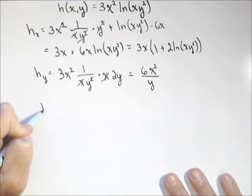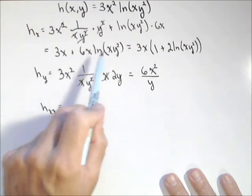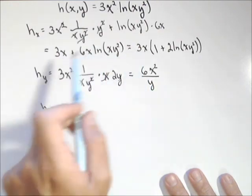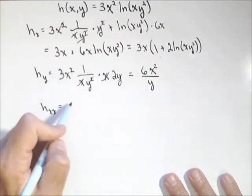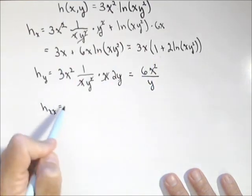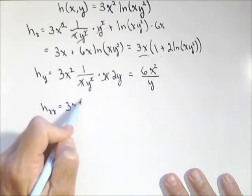All right, well let's find our second order partials, h sub x, x. Now again, probably either one of these is gonna be fine to use your second order partial. I'll do it from this one, because we're gonna use the product rule again. So three x, I leave that part alone, times the derivative of the second part.